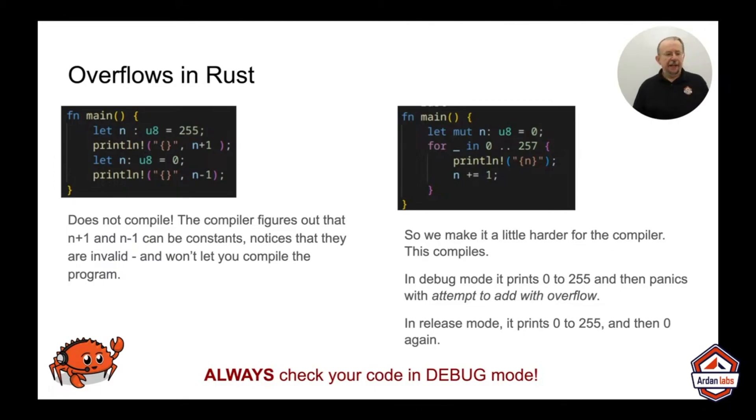So it's tracking the bit that gets set when you overflow in your CPU, checking it, printing it out. Now this is a slightly slower operation. So in release mode, the compiler optimizes that away. And in release mode, when you do cargo run minus minus release, it prints 0 to 255 and then 0 again. So the wrapping happened.